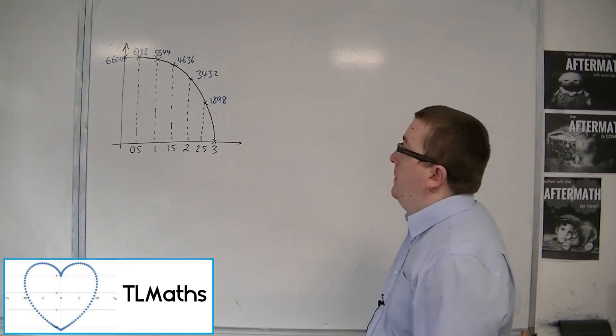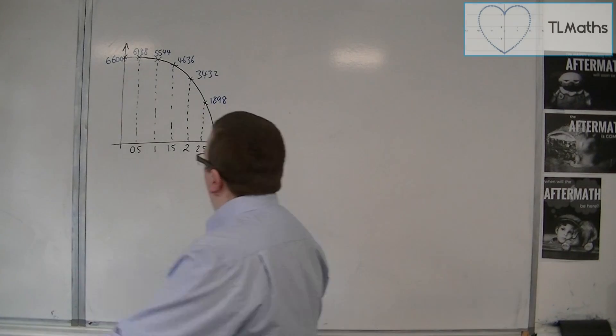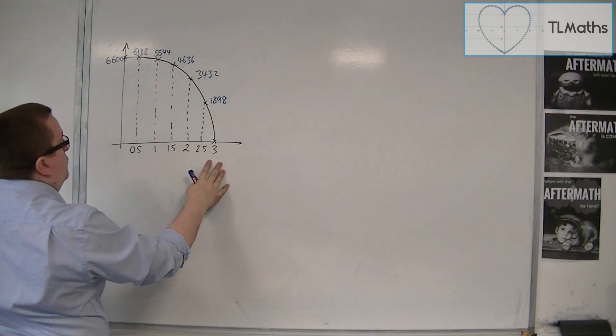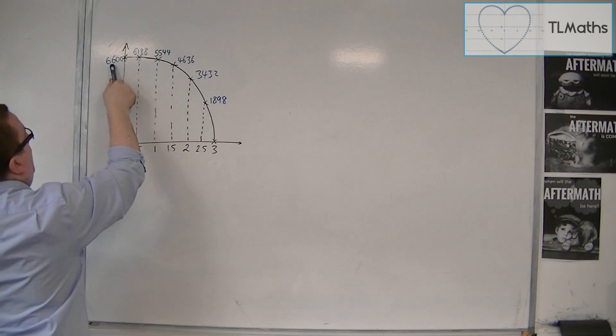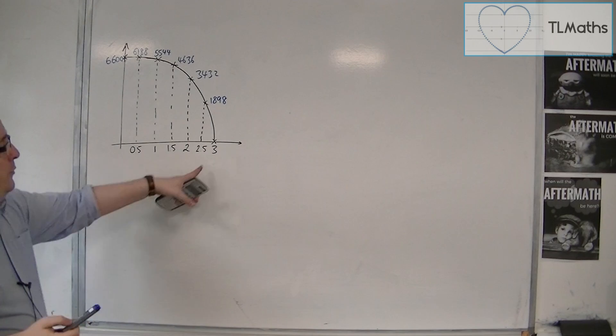So let's say I want to estimate the area underneath this curve. We've got the x values from 0 up to 3 and we've got the y coordinates for each of those points. The last one there will be 0.